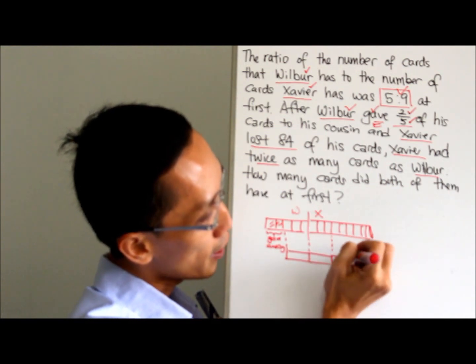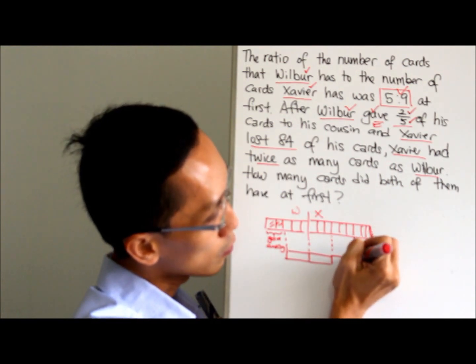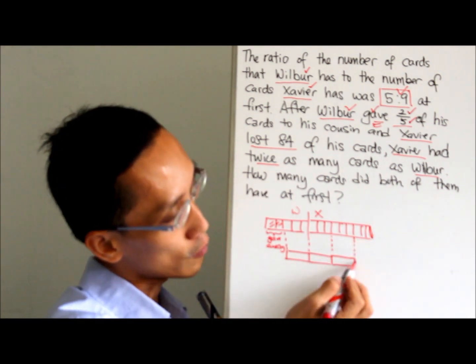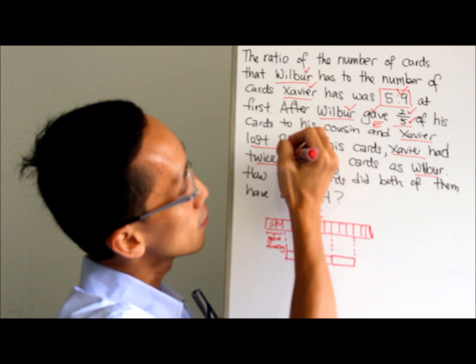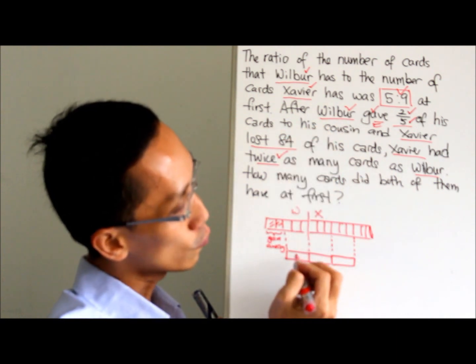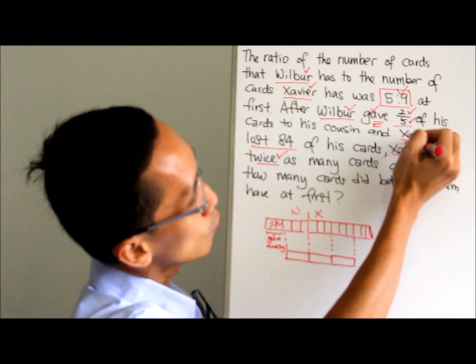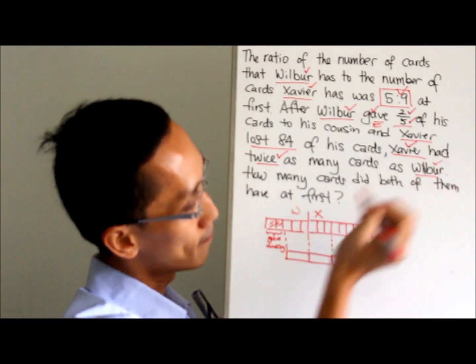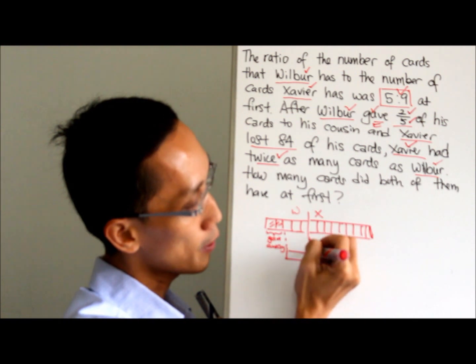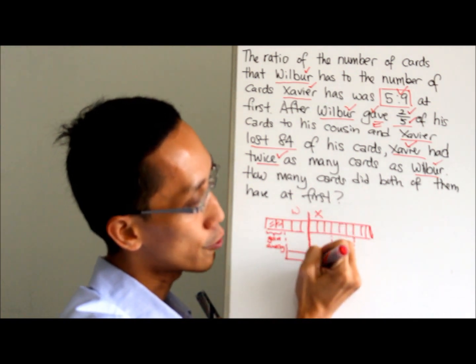So one unit, you need another two units. So twice: two units, one unit. Twice done already. Two is to one. Two is for Xavier, one is for Wilbur. So done. This part, the full nine, so you know this is the ratio.